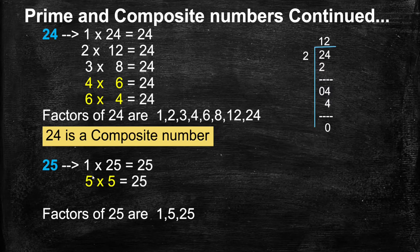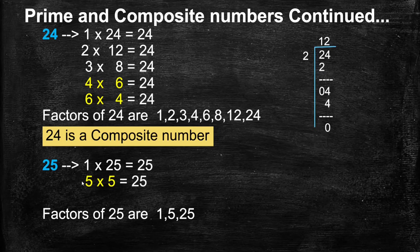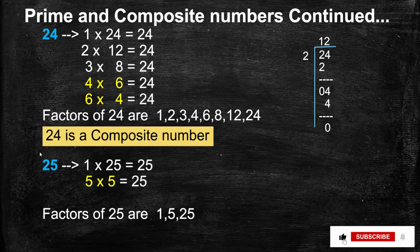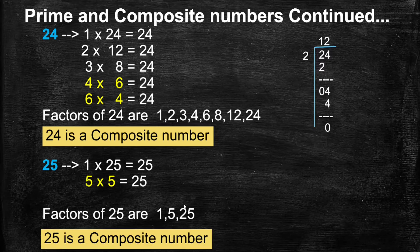Next, 25. We know 1 is a factor of every number, so 1s are 25, 25. 25 is not a multiple of 2 because the ones place is not an even number. 25 is not a multiple of 3, not a multiple of 4. 25 is a multiple of 5, which is 5s are 5, 25. We stop here because both factors are the same. Factors of 25 are 1, 5, 25. Since it has more than 2 factors, 25 is a composite number.